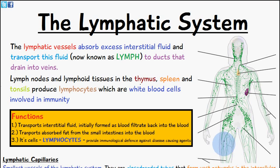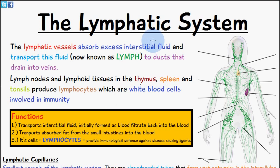We have lymph vessels, lymph ducts and lymph nodes. The purpose of lymph — what lymph actually is — is the interstitial fluid which has been passed or moved into the lymphatic vessels, and then it returns eventually back into the veins. So let's begin this lecture and we'll talk about it in a bit more depth.